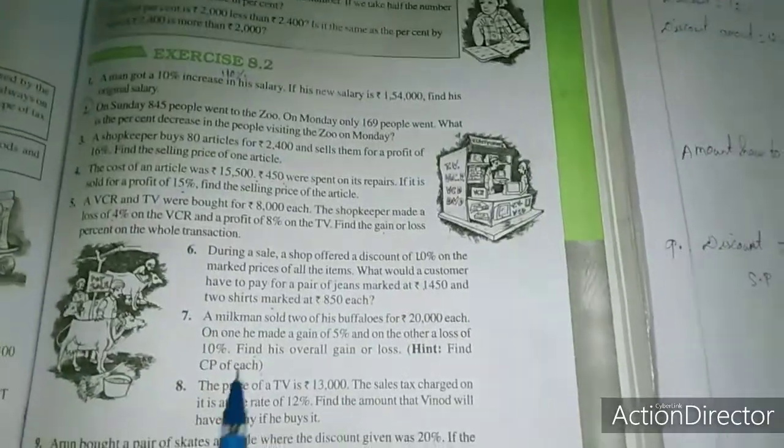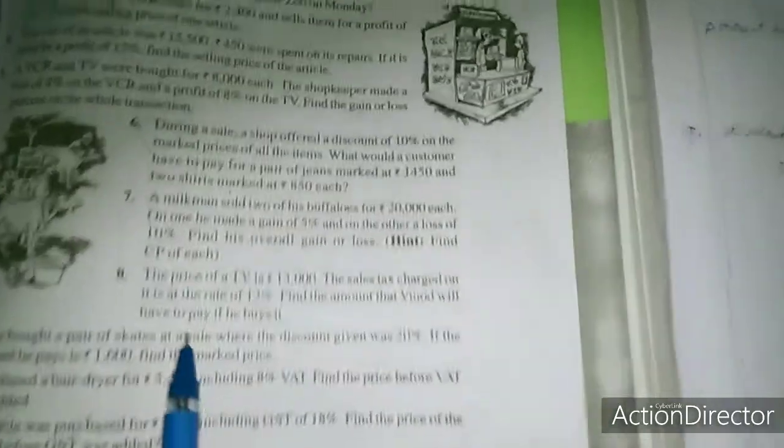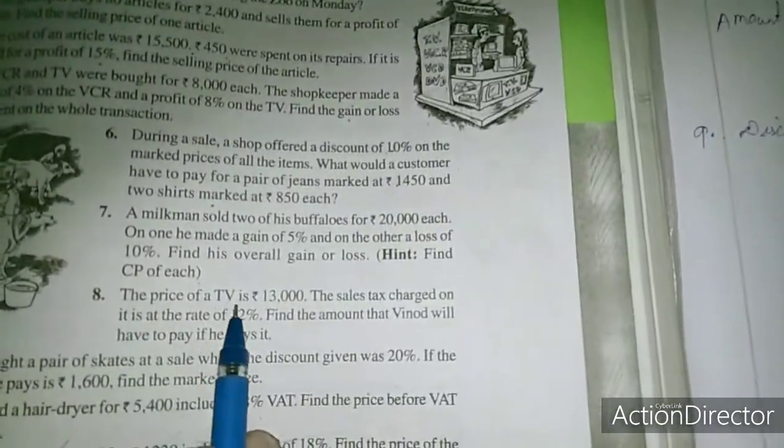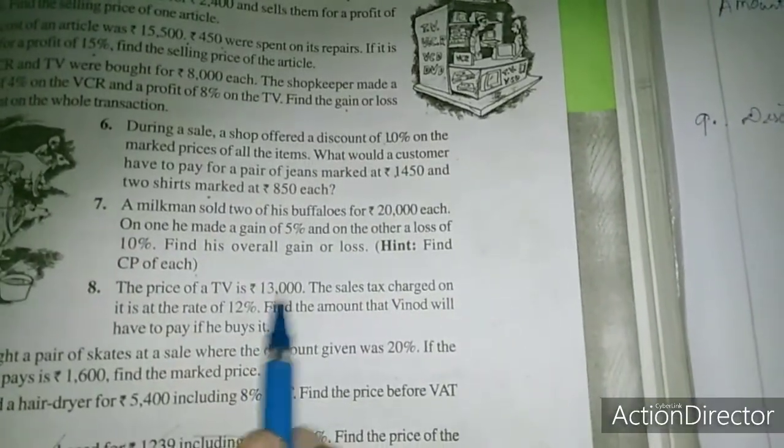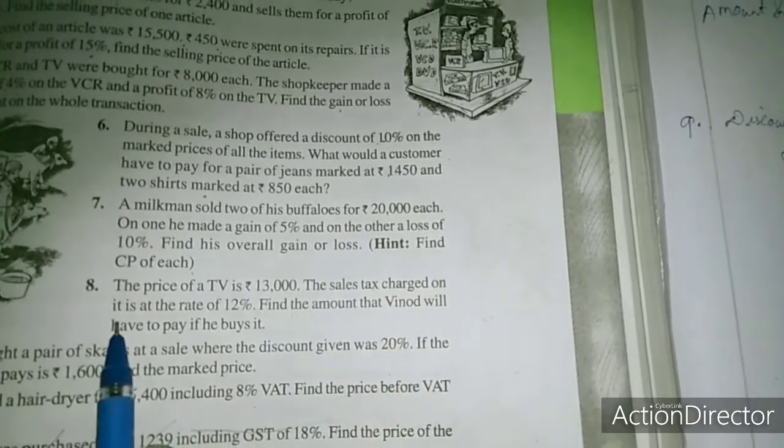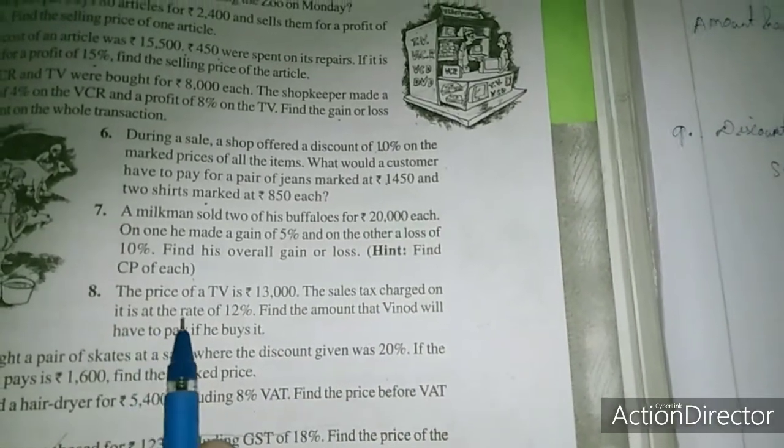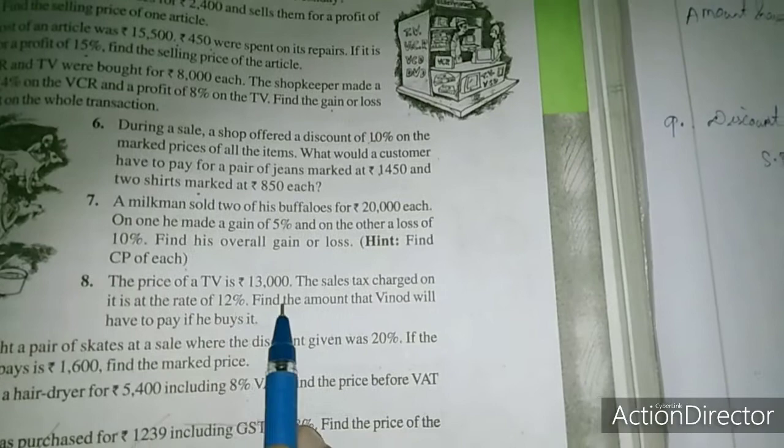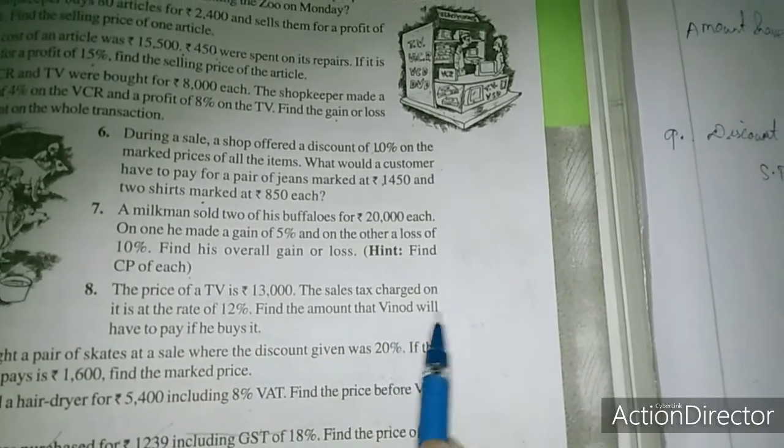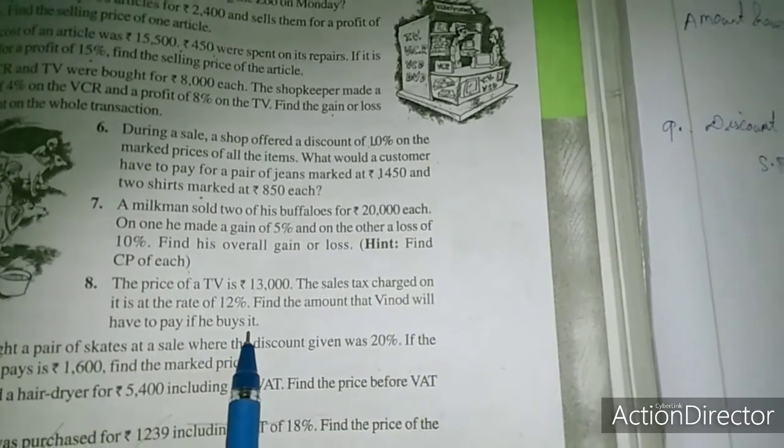Hi dears, in last class we completed exercise 8.2 up to problem 7. Now we will move to problem 8. See here, the price of a TV is rupees 13,000. The sales tax charged on it is at the rate of 12%. Find the amount that Vinod will have to pay if he buys it.